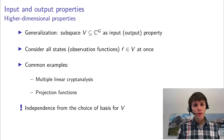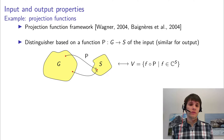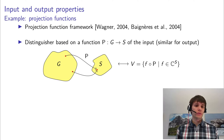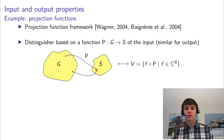So what are these projection functions? It's a framework introduced by Wagner at FSE 2004. And Ben Yer et al. at AsiaCrypt 2004 used this to provide a general statistical analysis of optimal distinguishers for projection function-based distinguishers. So what does it do? It says that we are building a distinguisher based not on the values of input and output itself, but on a projection of that.